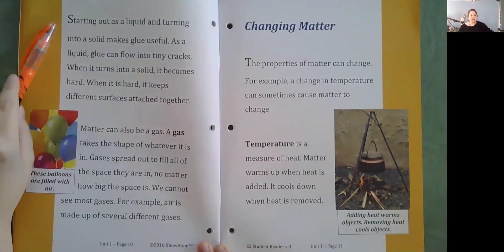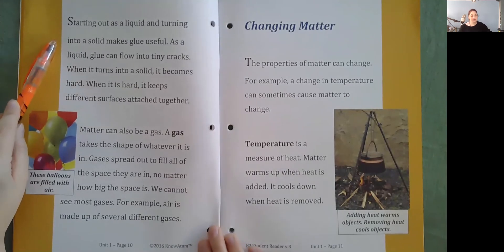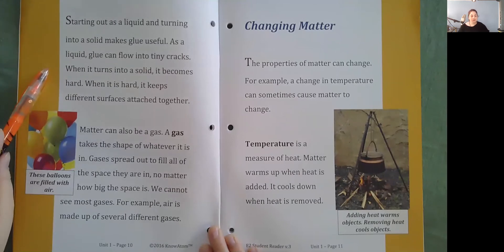Starting out as a liquid and turning into a solid makes glue useful. As a liquid, glue can flow into tiny cracks. When it turns into a solid, it becomes hard. When it is hard, it keeps different surfaces attached together.